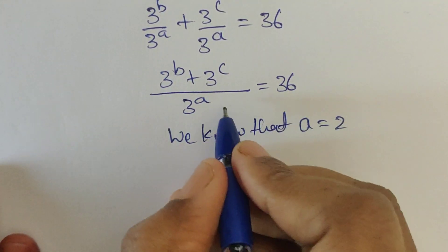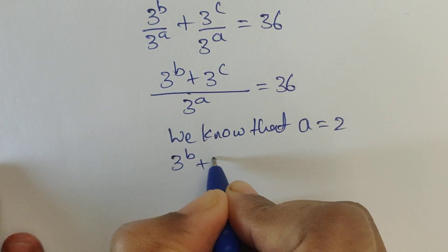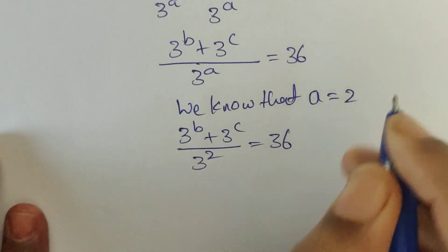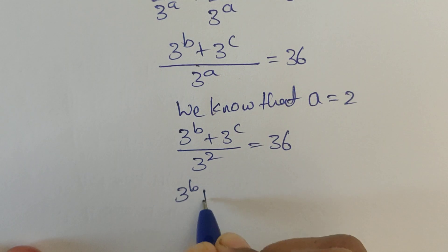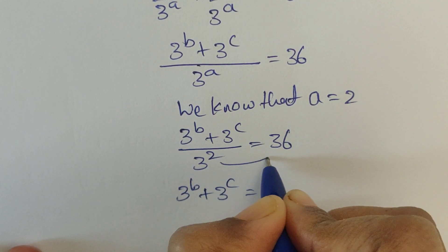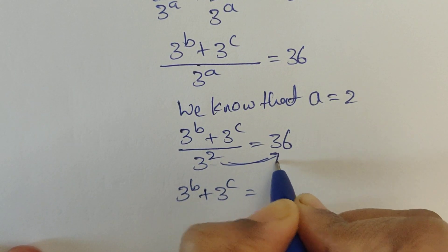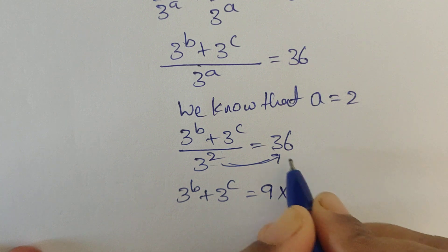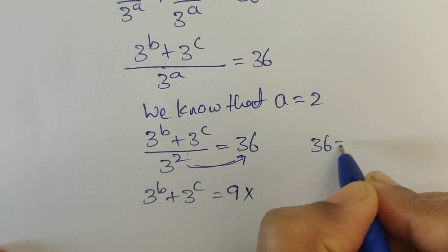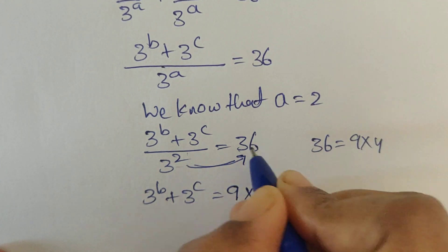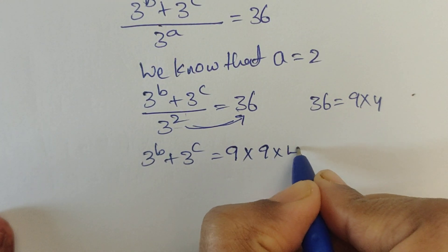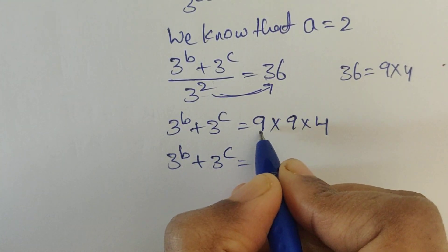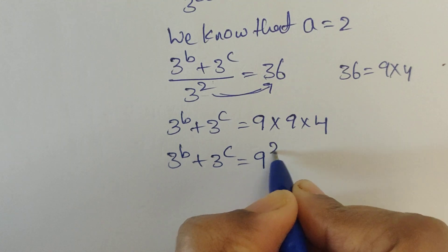Coming to this equation, subtract 1 from both sides. So 1 minus 1 plus 3 power b minus a plus 3 power c minus a equal 37 minus 1. Here 1 minus 1 is equal to 0, so now it will be 3 power b by 3 power a plus 3 power c by 3 power a equal 36. So 3 power b plus 3 power c divided by 3 power a equal to 36. We know that a equal to 2, so substitute: 3 power b plus 3 power c equal to 9 times 4, which is 9 squared times 4.